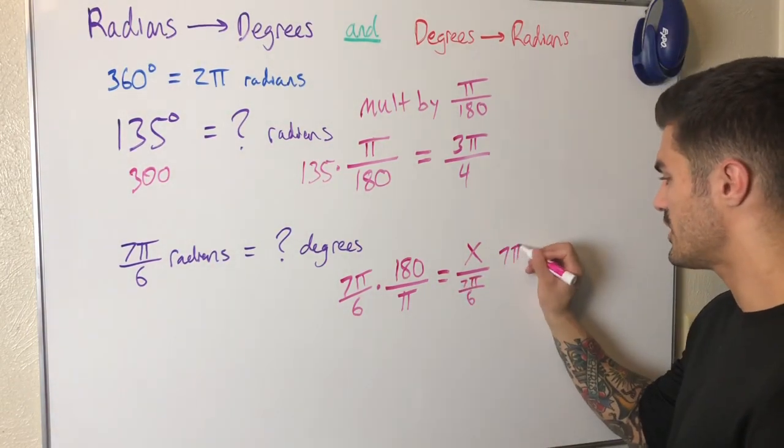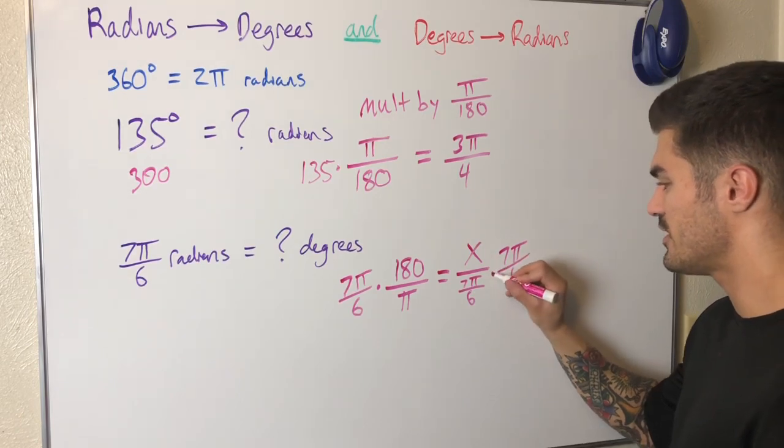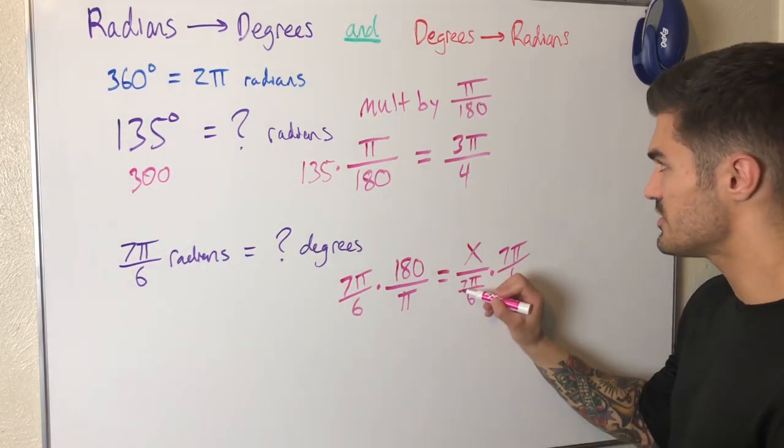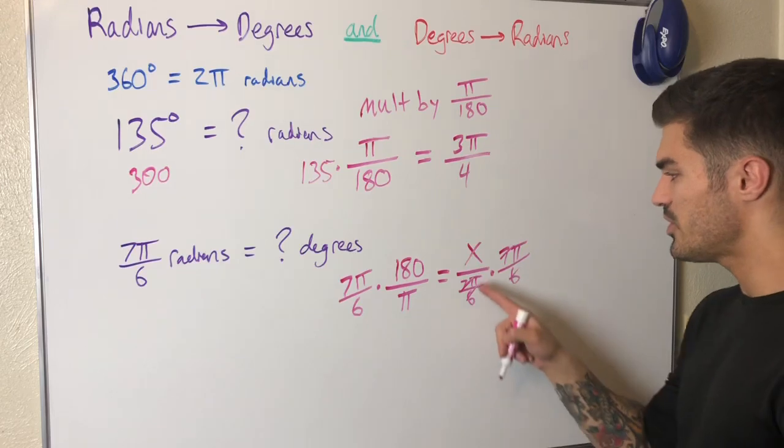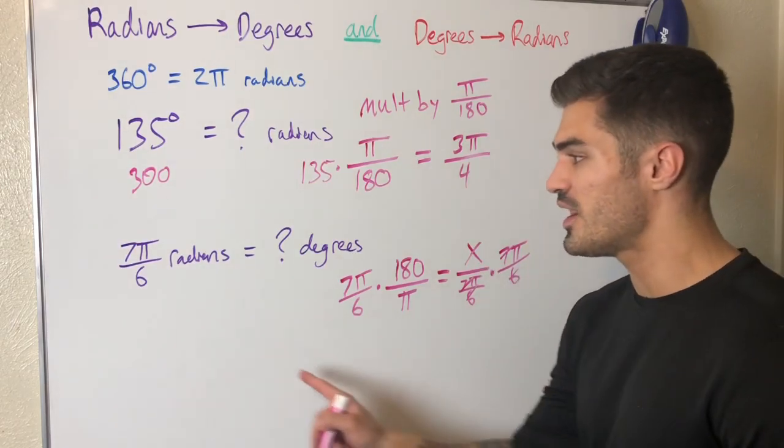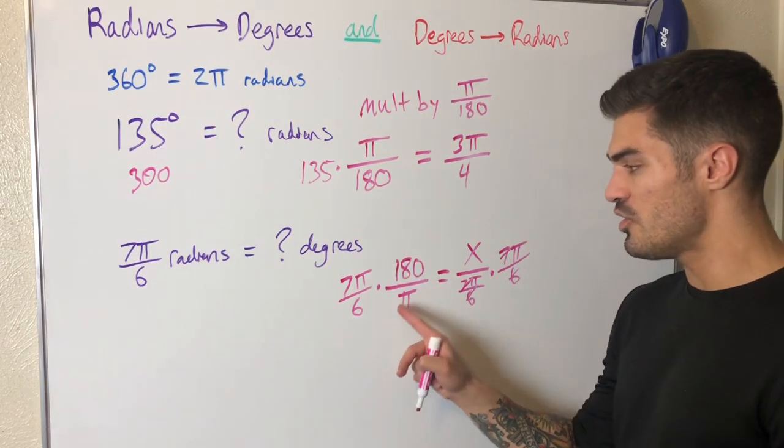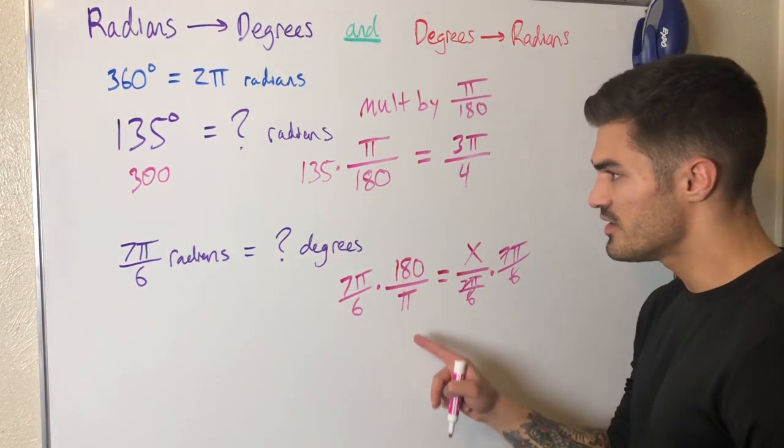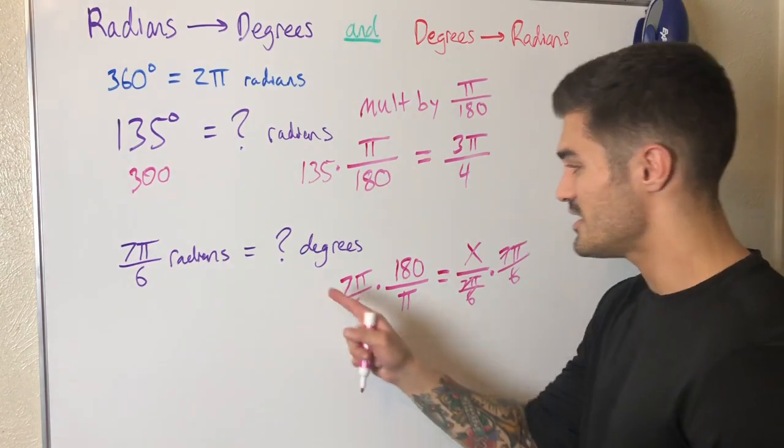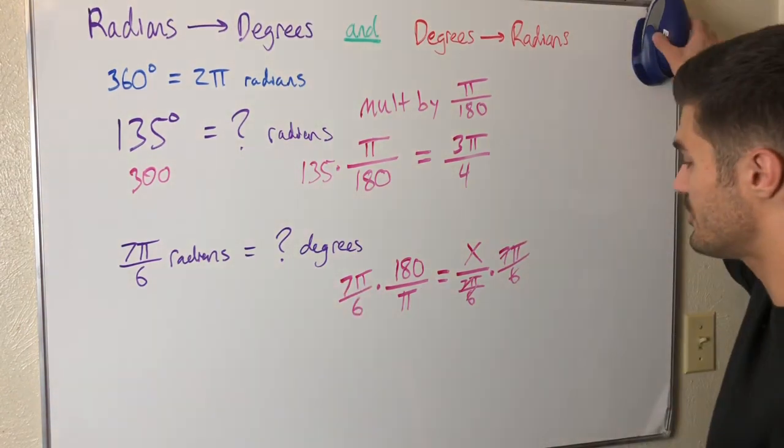This is going to give us—let me make sure to write that out. That cancels here and I'm left with x, which is what I'm trying to find. That's what this is in degrees. It equals 7π over 6 times 180 over π. When I evaluate this, that will be 7π over 6 radians in degrees.